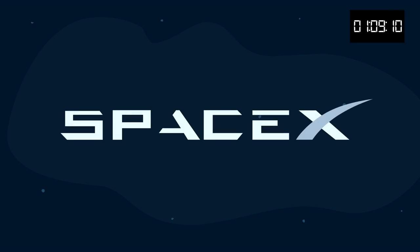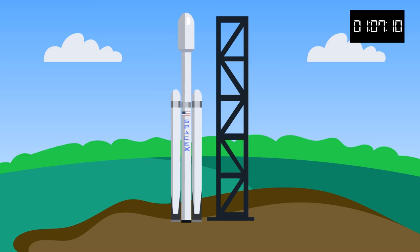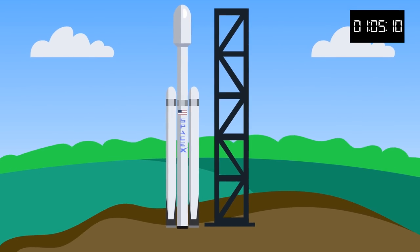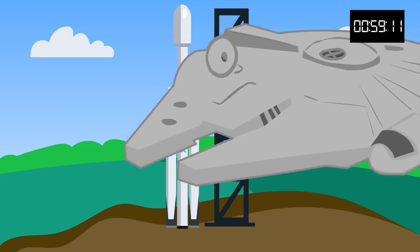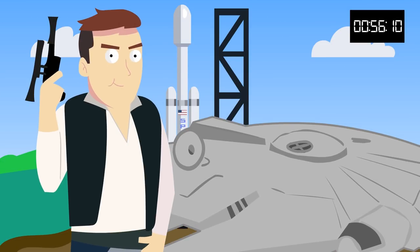Musk founded SpaceX with $100 million of his own cash. In February 2018, SpaceX successfully test-launched the most powerful operational rocket in the world, the Falcon Heavy. And yes, the Falcon does take its name from a certain stuck-up, half-witted, scruffy-looking nerf herder.